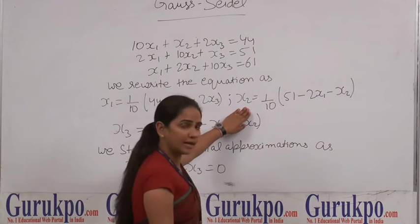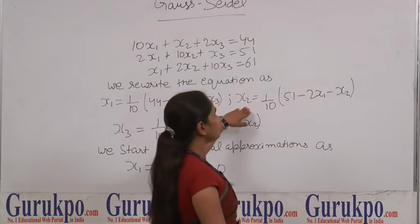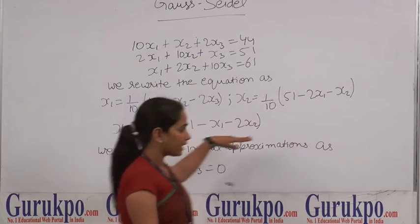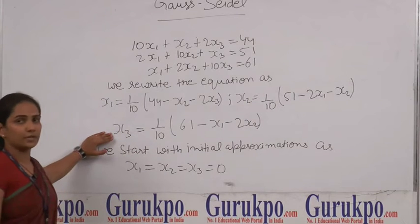We will do the same for the x2 variable. x2 will be put on the left side and all the variables will be put on the right side, and the same for the third case also.